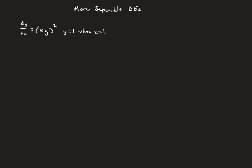On this video, we're going to revisit separable differential equations. We're going to work a few more examples, but add a deeper level of complexity and try to ask some more challenging questions. Here's our differential equation to start with: dy/dx is equal to (xy)². We have the initial condition that y is equal to 1 when x is equal to 1.